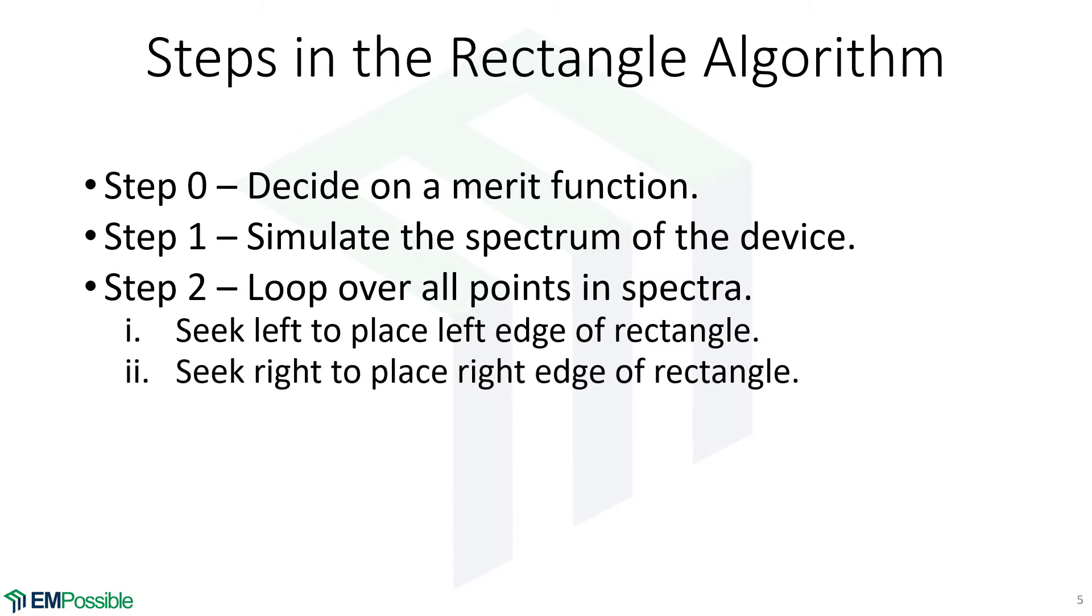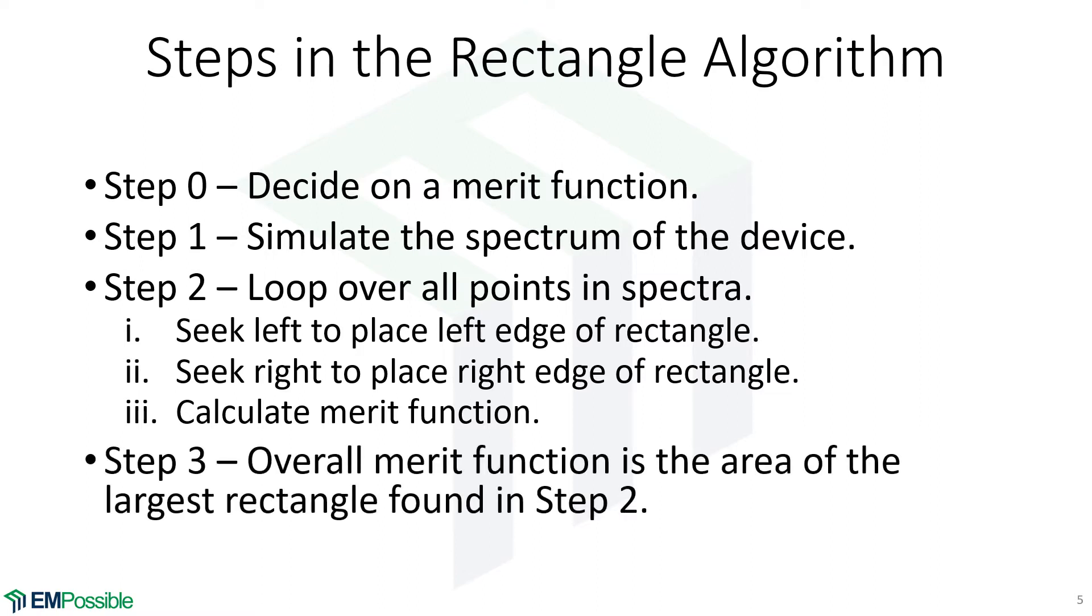We seek right until we hit the spectra curve again, and that sets the right. From there, we calculate the width and the height. That's our merit function from that specific point on the spectra. And in step two, we loop over all of those, and we compare all of the rectangles that we've calculated from each point. We figure out the biggest one, and then that becomes the overall merit function for the device, the biggest rectangle. All the other ones we just ignore and forget about.